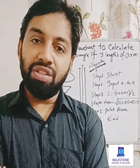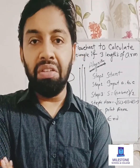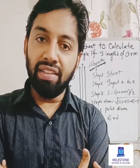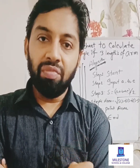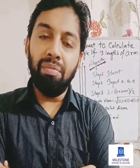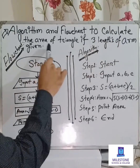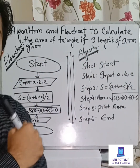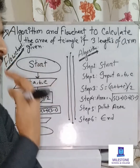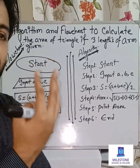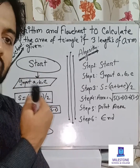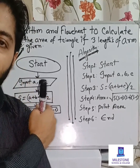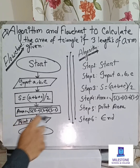In this pandemic situation we have to continue our daily lives — including food and study. So let's get started with today's lecture on algorithm and flowchart to calculate the area of a triangle. We have three lengths of sides: a, b, and c — given as input or provided by the user.